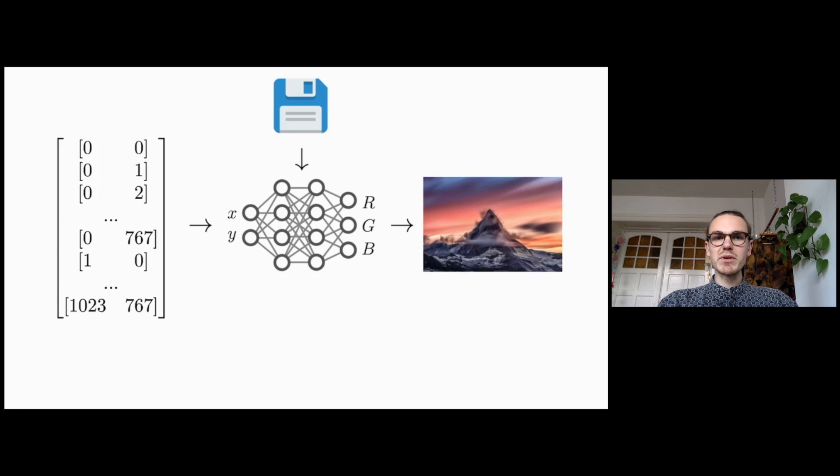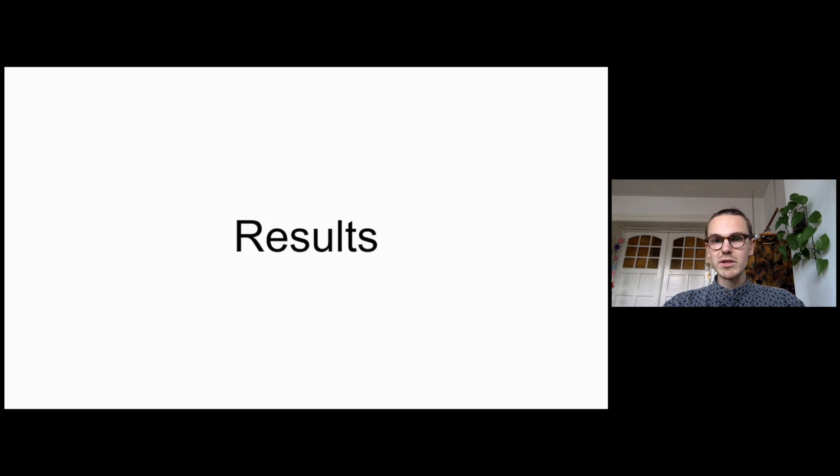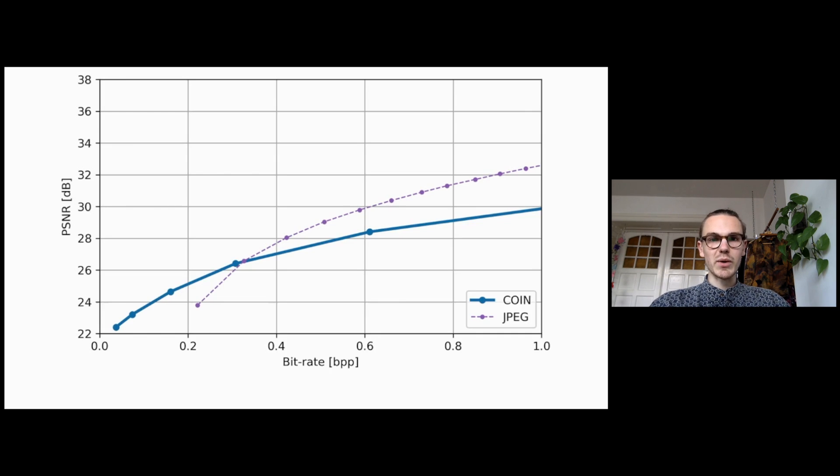After training, we reduce the precision of the weights from 32 to 16 bits and store them as compressed representation of the image. To decode the image, we simply load the parameters of the network and evaluate it for every pixel location, which yields a reconstruction of the image.